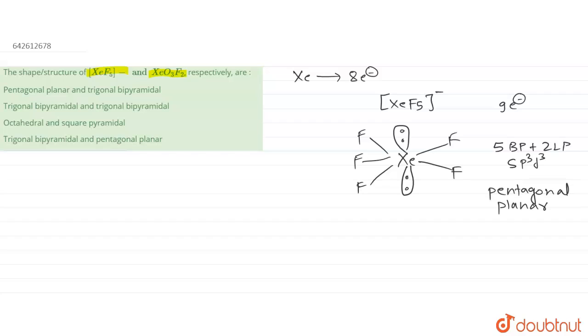Now we will talk about compound number two, which is XeO3F2. Similarly, the structure of this particular will be somewhat like this: double bond O, double bond O, double bond O, and there will be one fluorine over here and the other fluorine over here.